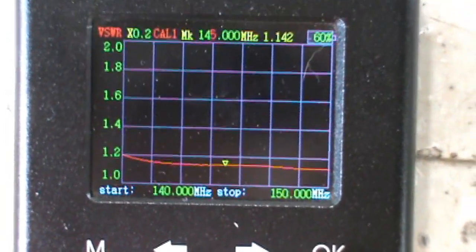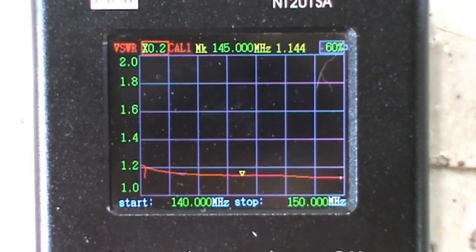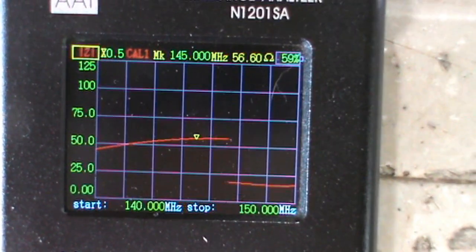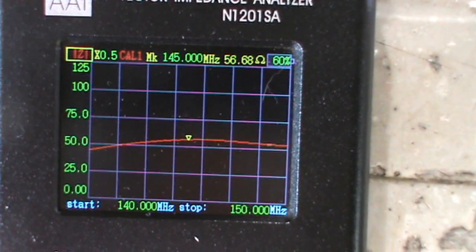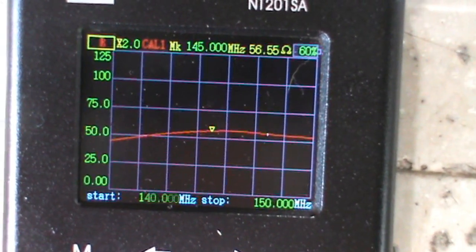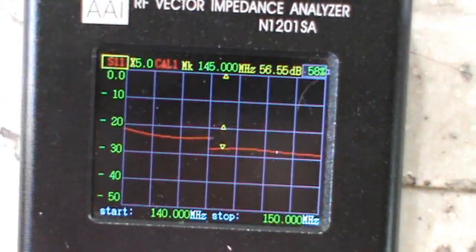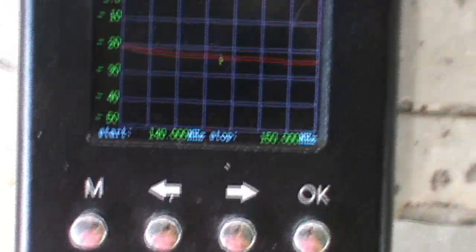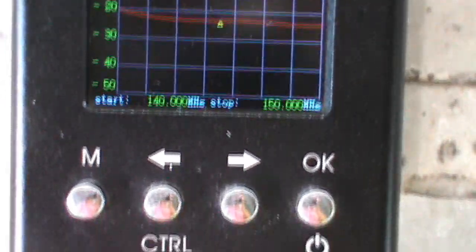Let's check S11. Impedance is about 56 ohms. Antenna reflection coefficient is about 23.26 dB at 145 MHz.